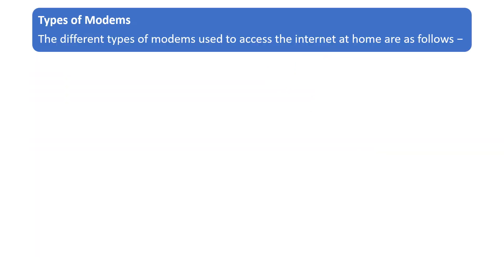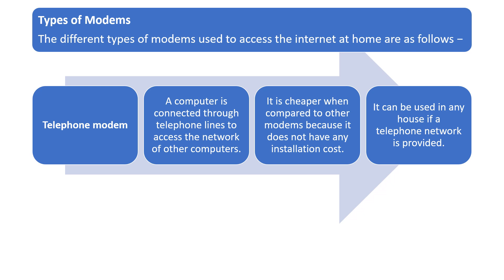Now we can move to the types of modems. There are different types of modems used to access the internet at home. The first one is the telephone modem. A computer is connected through telephone lines to access the internet or a network of other computers. It is cheaper when compared to other modems because it does not have any installation cost and it can be used in any house if a telephone network is provided.